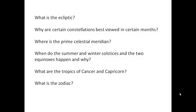The Sun on a star chart. We're going to try and answer quite a few questions in this video — probably not in very much depth, but it'll give us some idea. First of all: what is the ecliptic? Why are certain constellations best viewed in certain months? Where is the prime celestial meridian? When do the summer and winter solstices and the two equinoxes happen, and why? What are the tropics of Cancer and Capricorn? And what is the zodiac? There's quite a lot to do — let's get cracking.